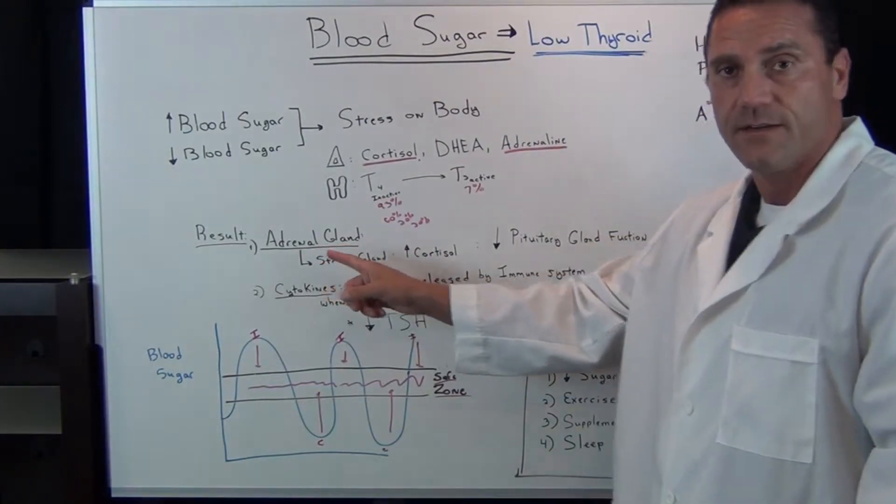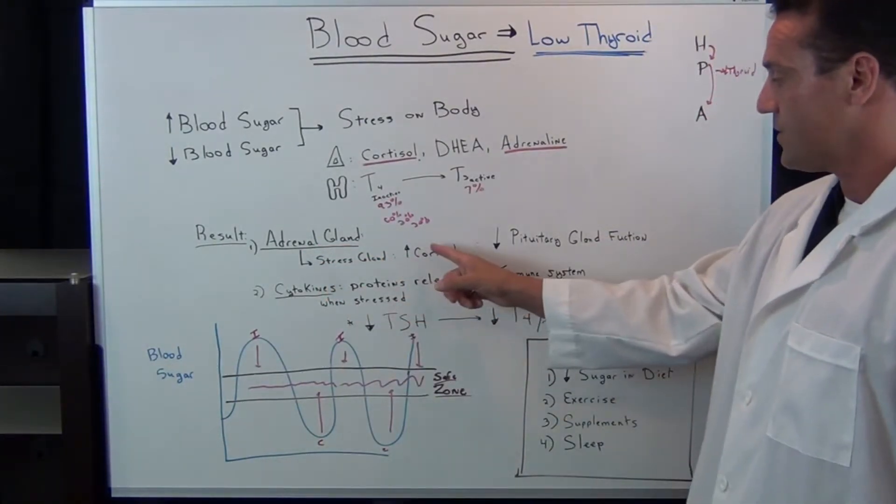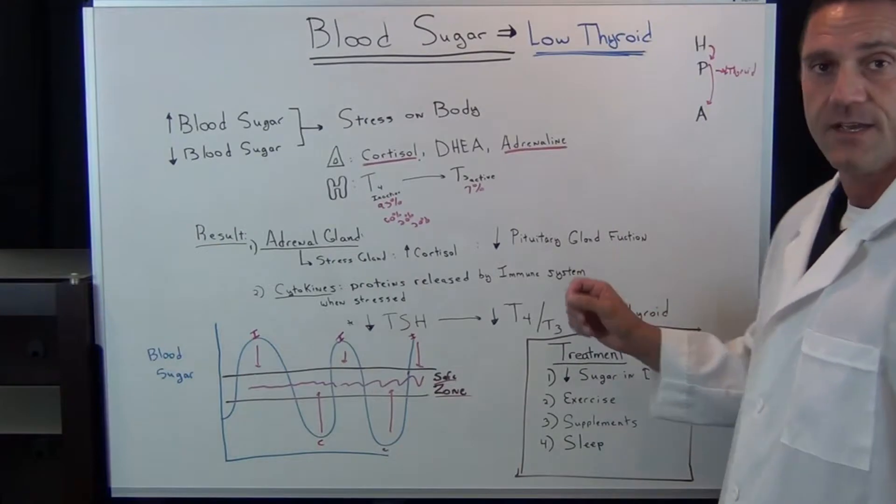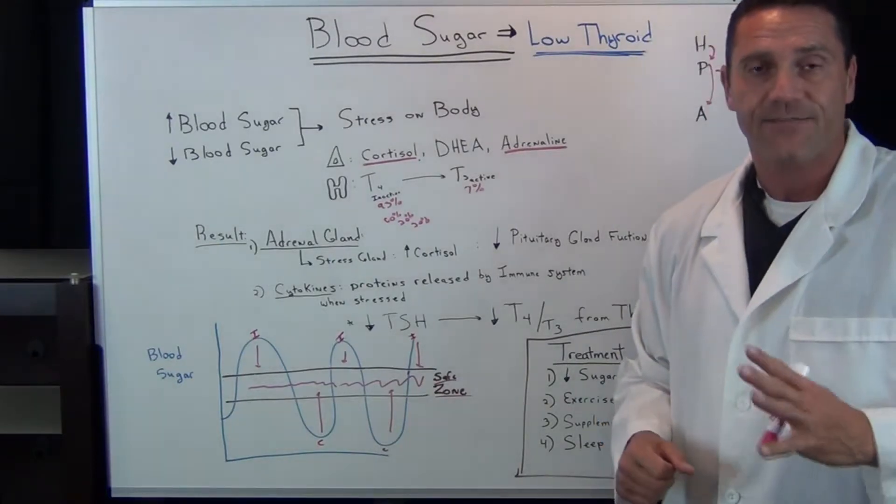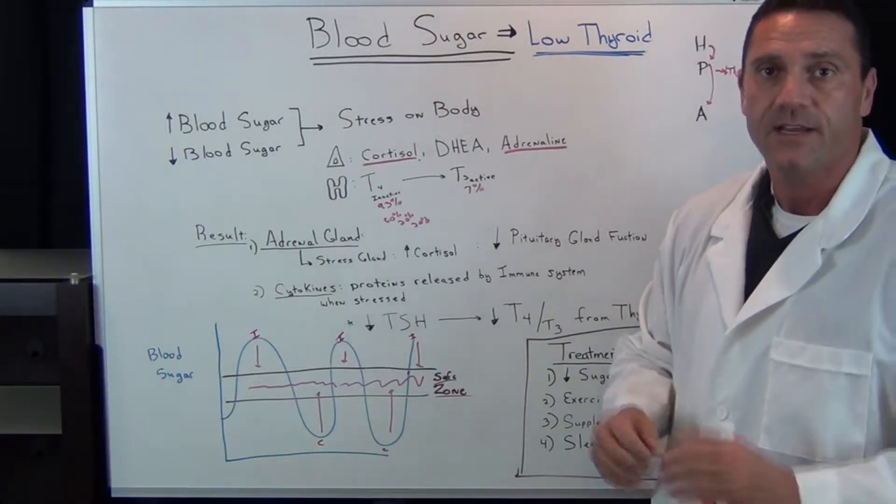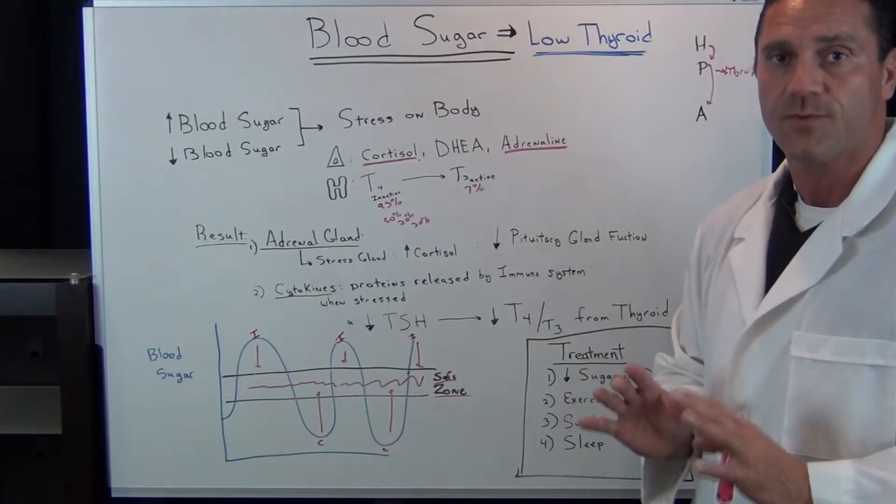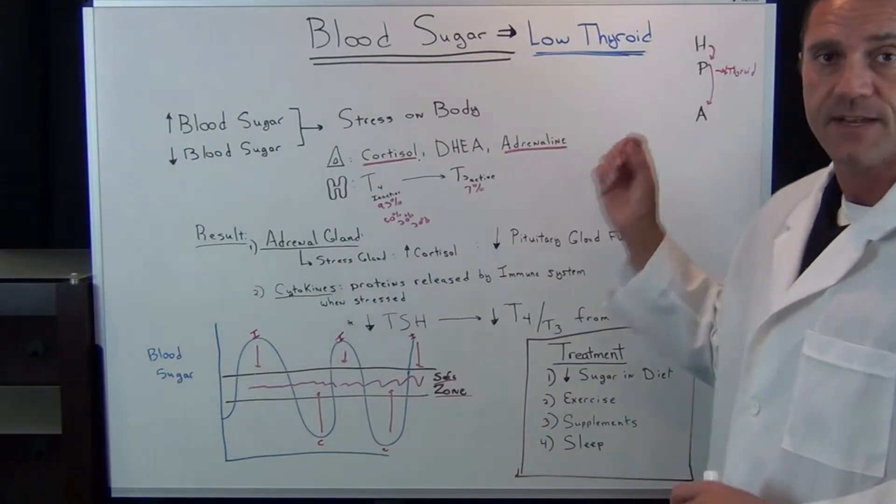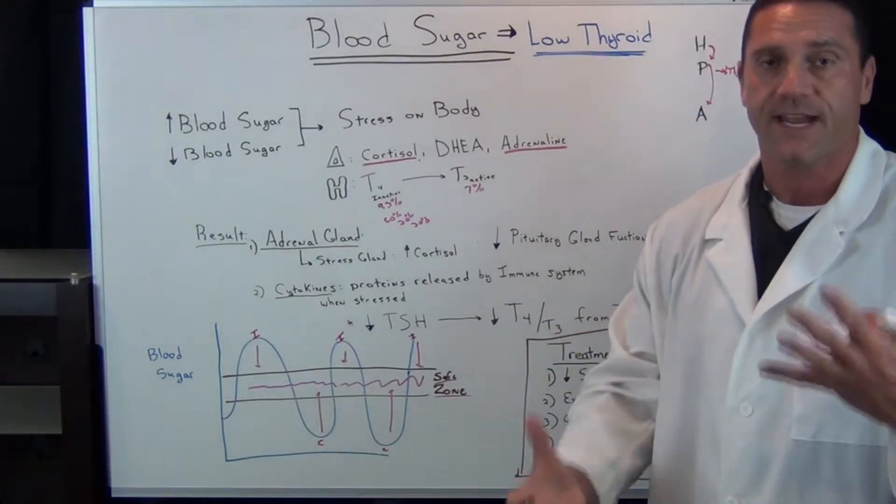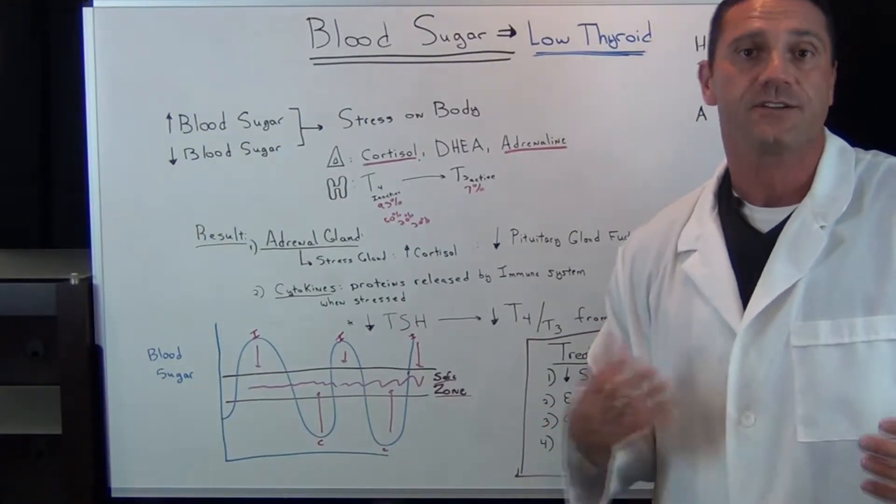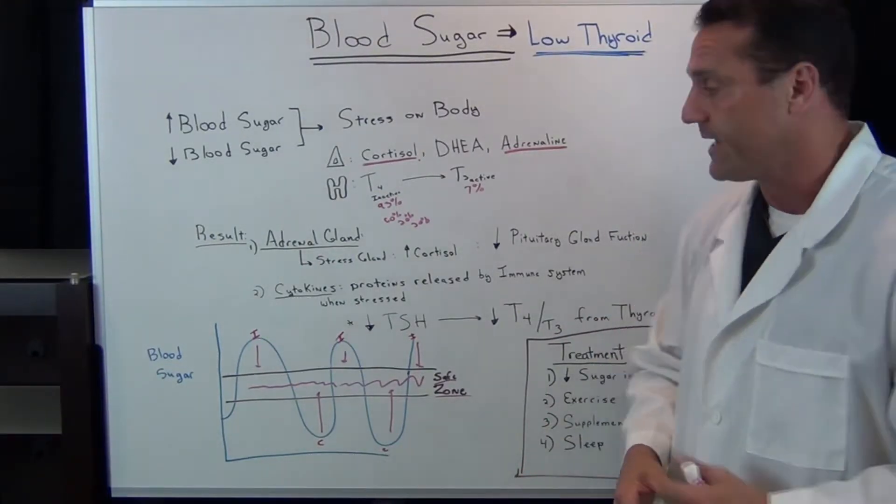Increased adrenal gland function, too much cortisol, decreases the pituitary gland. The effect of decreased pituitary gland actually slows down all other hormone release, especially the thyroid, because the adrenals and the thyroid work together. I always say that the adrenal glands are your battery backup to your thyroid gland.